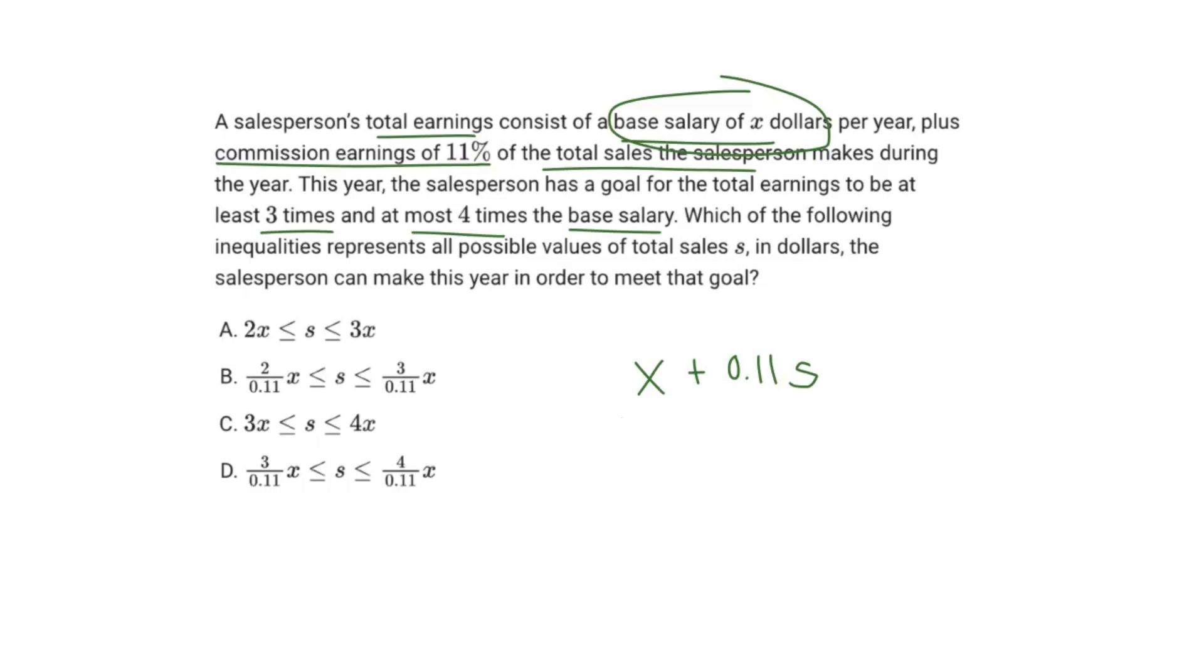So I'm actually just going to erase this and write our inequality. We know that has to be at least three times the base salary, so let's write 3X is less than or equal to our total earnings, and at most four times the base salary, so less than or equal to 4X.